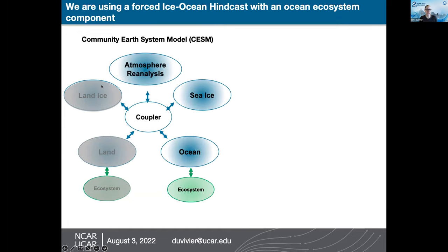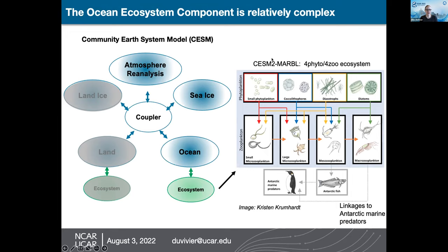I'm mainly going to talk about a version of the CESM called a hindcast, where we drive the sea ice and ocean with an atmospheric reanalysis — the most like reality we have. The ecosystem model we're using is called the MARBL ecosystem model. The particular version we're using has four phytoplankton types: small phytoplankton, coccolithophores, diazotrophs, and diatoms, and four zooplankton types from small microzooplankton up to macrozooplankton.